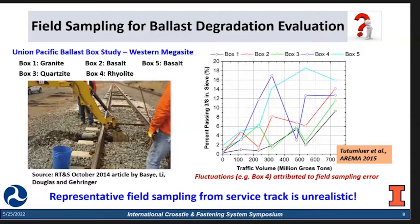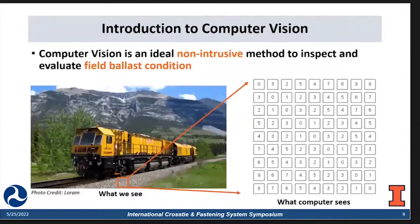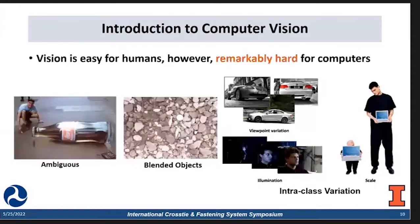Computer vision is the ideal approach because it is non-intrusive and helps us evaluate the field ballast condition. What humans see is just a 2D color image, and we can easily inspect what's inside. But what the computer sees is complicated — a matrix of different values which is ambiguous, with many blended objects and intra-class variation. These all bring difficulty to computers.